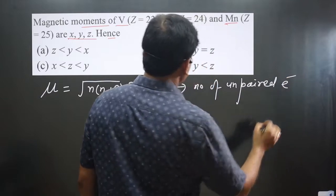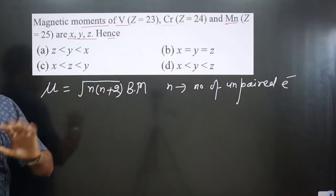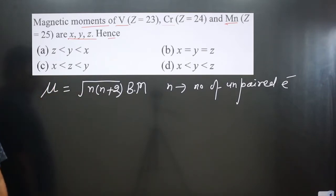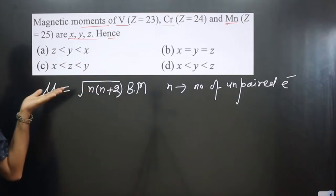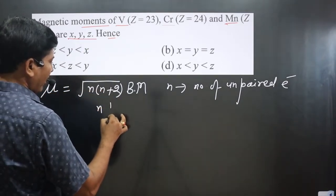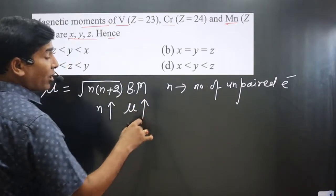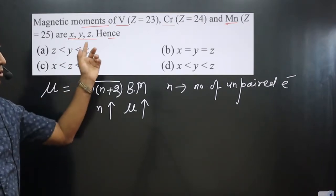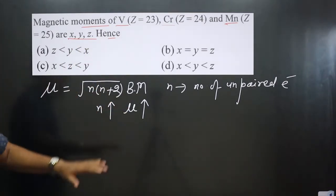The magnetic moment value depends on the n value. Higher the n value, higher is the magnetic moment — because higher the number of unpaired electrons, higher is the μ value. So as n increases, magnetic moment value also increases. We calculate unpaired electrons in each element to make the comparison.